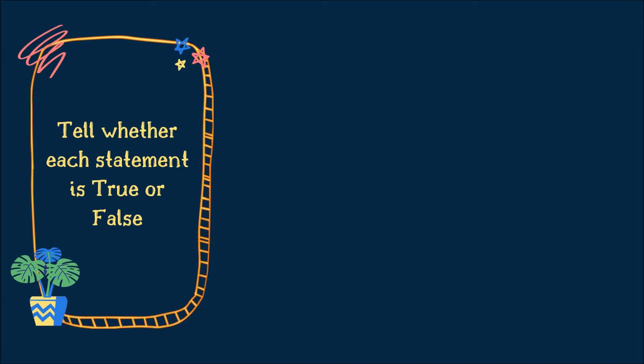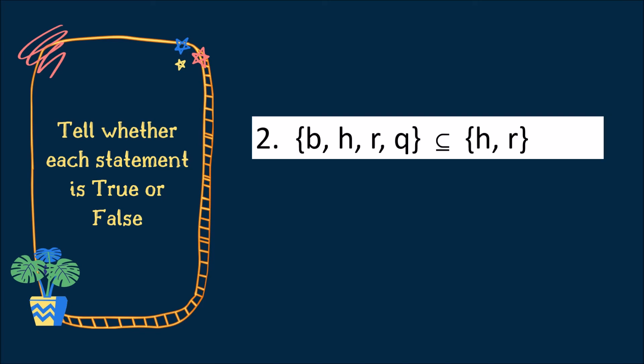Number 2. Set with elements B, H, R, and Q is a subset of Z, H, R. Is it true or false? Keep on trying! Very good! The answer is false.